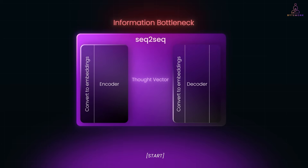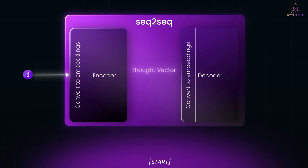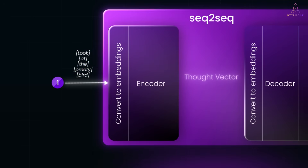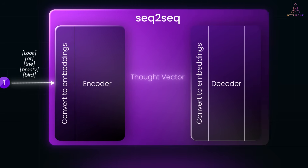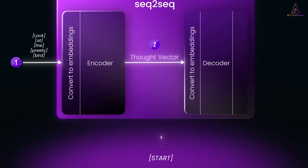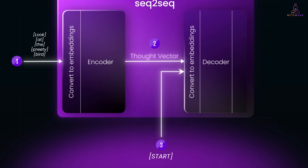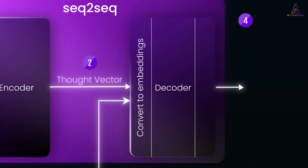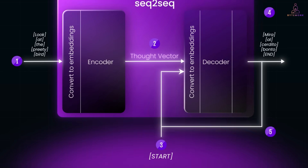Let me show you what that means. On the left, we feed in the input sequence token by token — for example, 'look at the pretty bird.' Each token is converted into an embedding, a numerical vector, and passed into the encoder. As tokens flow in, the encoder updates its internal state. This rolling state stores the meaning of the sentence. Once all tokens are processed, the encoder compresses everything into a single fixed-length vector called the thought vector. That thought vector is passed into the decoder, which gets a special start token to begin generating the output — in this case, the translated sentence in Spanish. The decoder generates one word at a time, say 'MIRA,' then 'EL.' Each word it produces gets fed back into the decoder to predict the next one, until it reaches an end token.